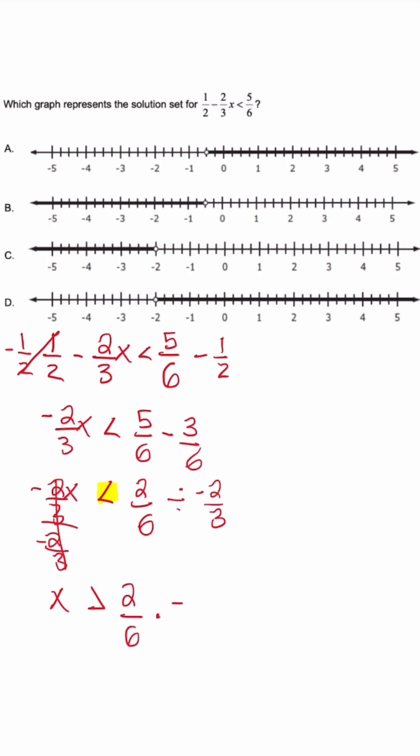When we cross cancel and divide by 3, this 3 turns into 1, this 6 turns into 2. And when we simplify we're going to get x is greater than negative 2 over 4, which is just saying that x is greater than negative 1 half. So when we look at our answer choices, that would be answer choice A.